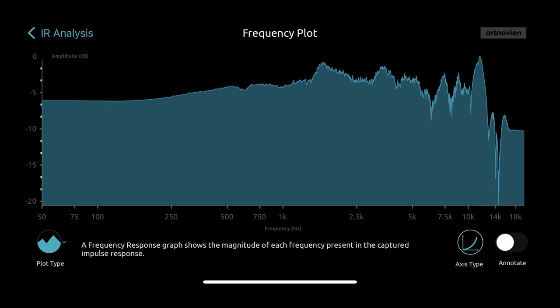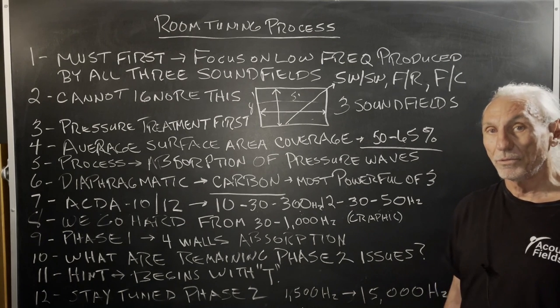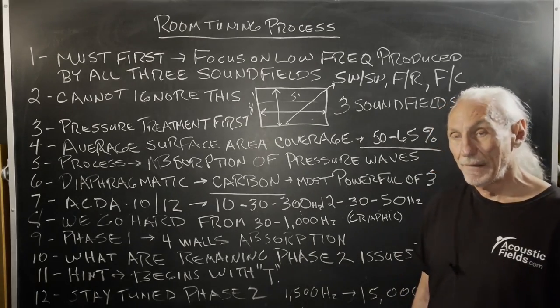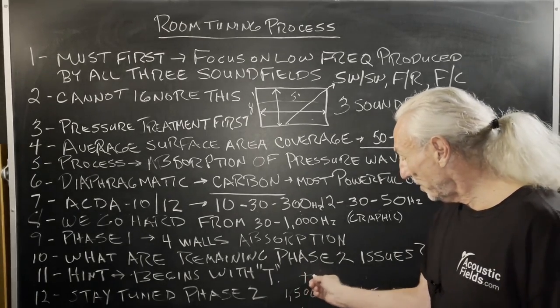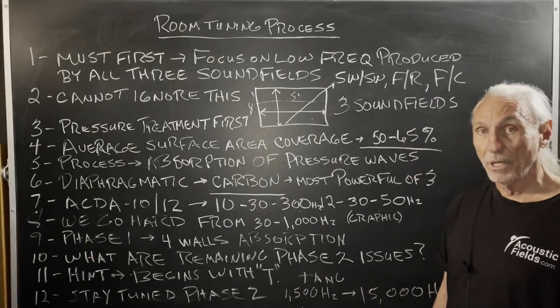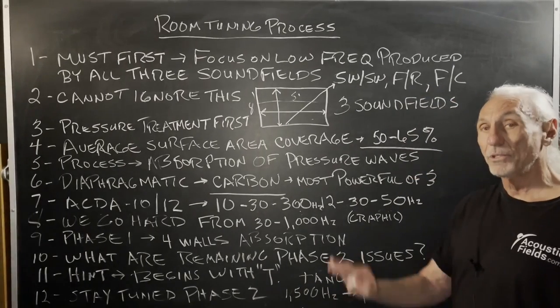Of course, we have 1500 to 15k. But let's think about those issues. What are those? I'm going to give you a little hint. It begins with a T. Those of you who said tangential, you're right. And we'll go after those too. Phase two. Then there's a phase three.